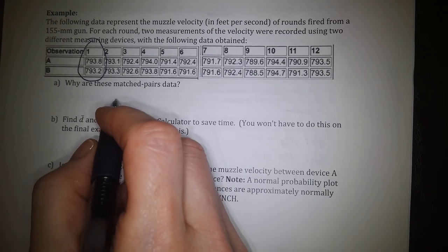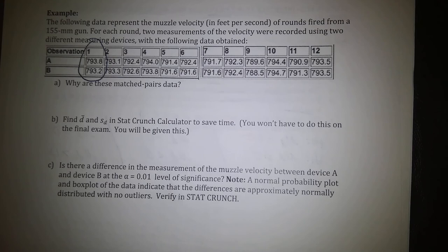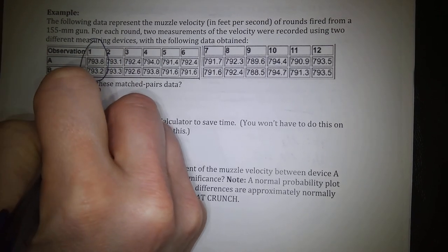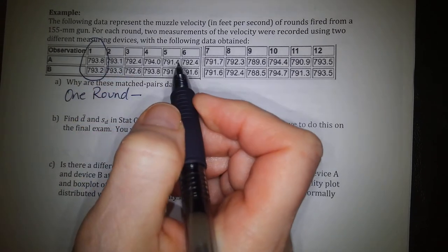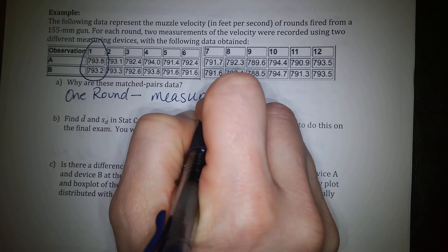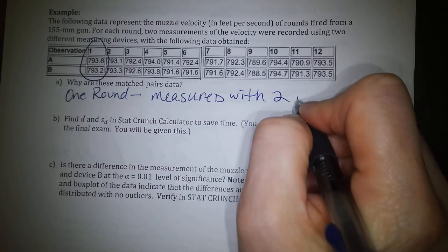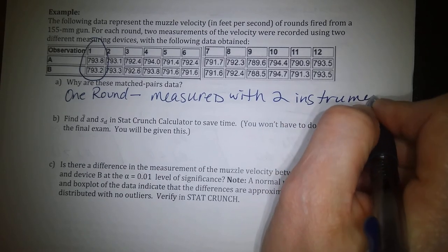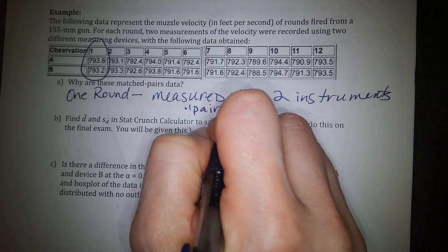That's the answer to Part A — why is this matched pairs data? You're only letting one round go, one bullet, and it's going to be measured with two different techniques, and those measurements will be paired together.